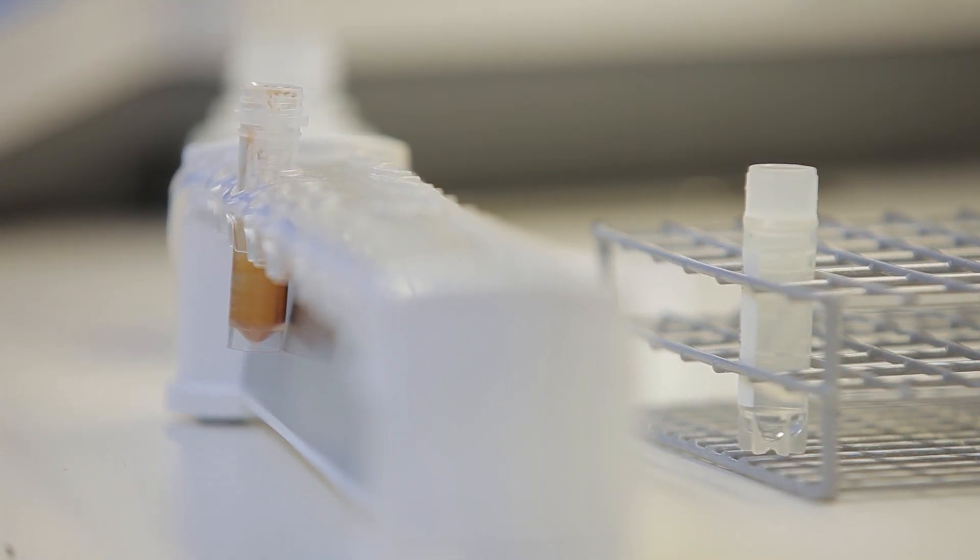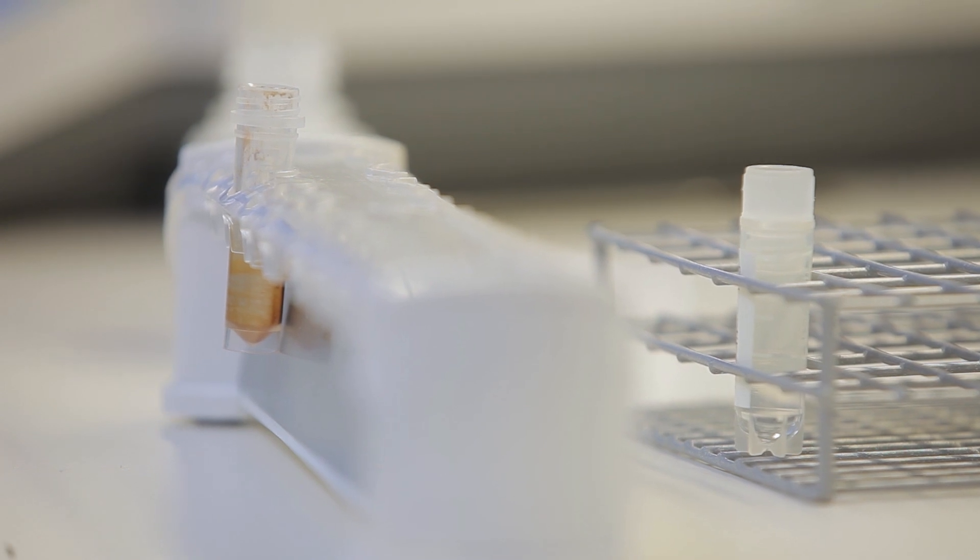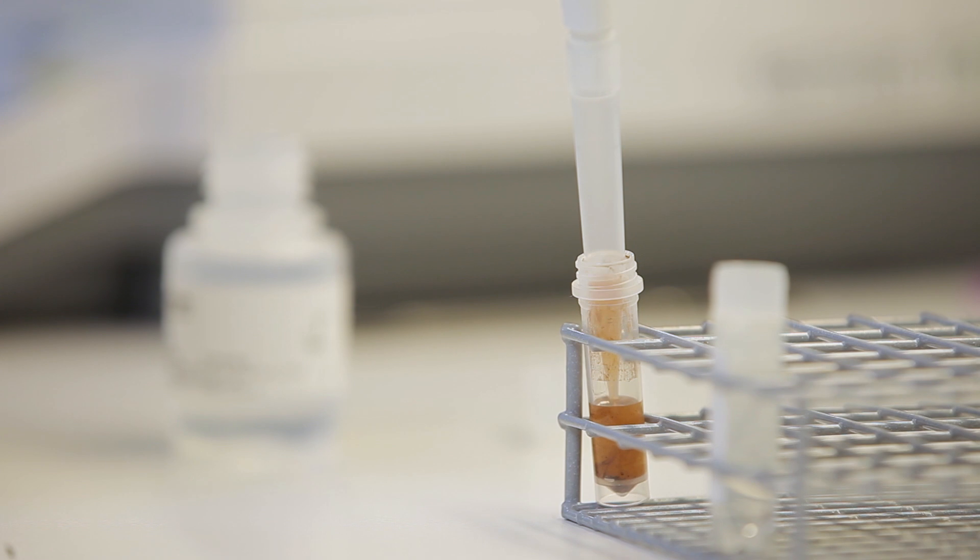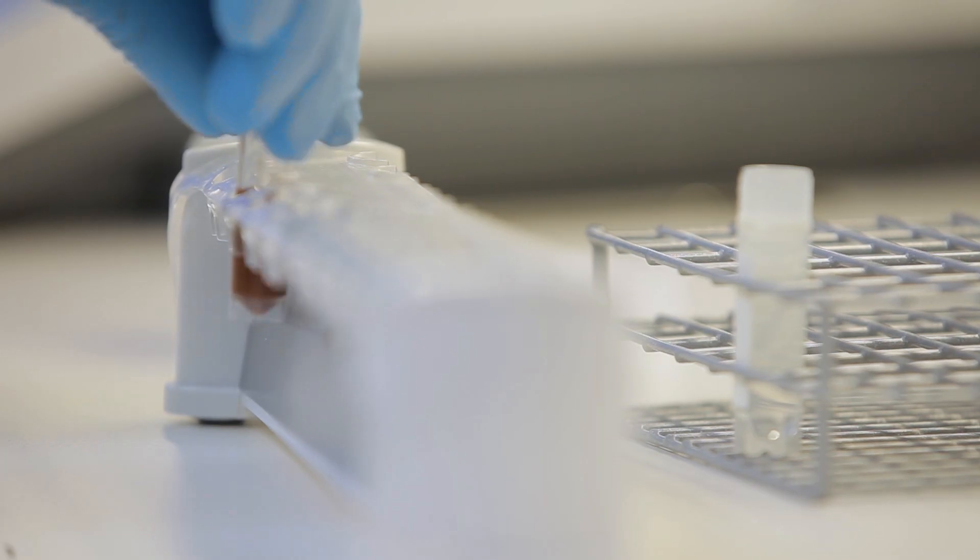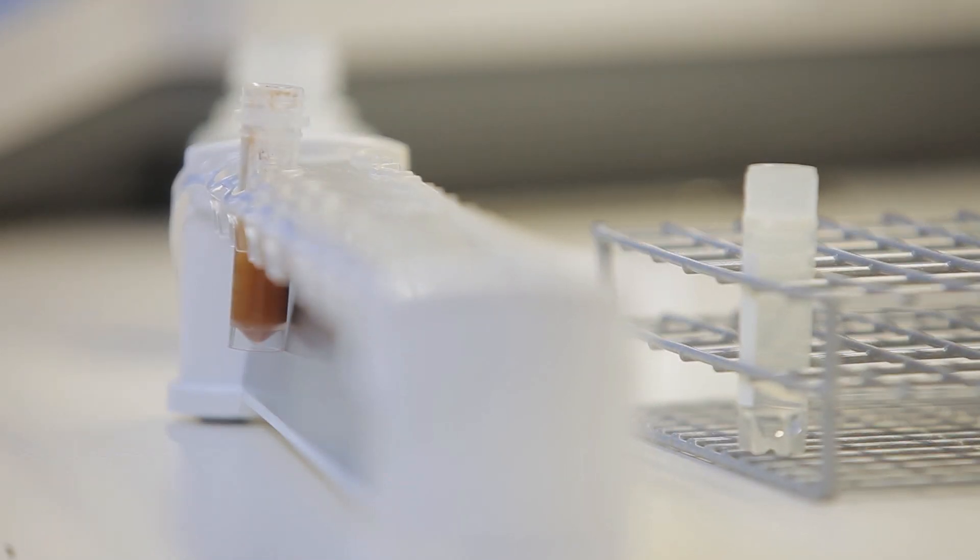Wash the beads once using C1 buffer. Mix the beads and buffers gently by pipetting or vortexing for a few seconds. Place the tube in the magnet for two minutes to collect the beads and remove the supernatant.